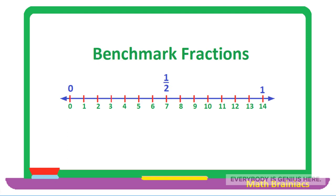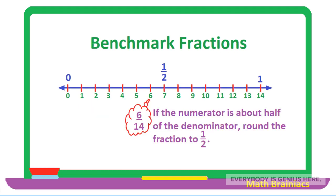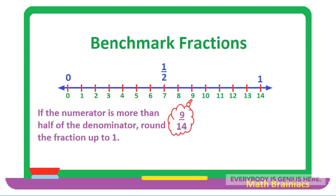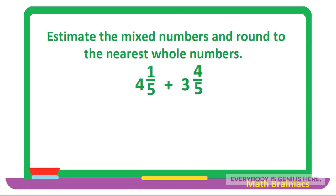Benchmark fractions are fractions that can be measured or judged when measuring fractions. For example, if the total number of portions on the number line is 14 and our fraction is 2 over 14 — if the numerator is much smaller than the denominator, we round the fraction down to zero. If the numerator is about half of the denominator, we round it to one half. In this topic, if the numerator is less than half of the denominator we round down to zero; if the numerator is more than half of the denominator we round up to one; and if the numerator is almost as large as the denominator, we also round it up to one.